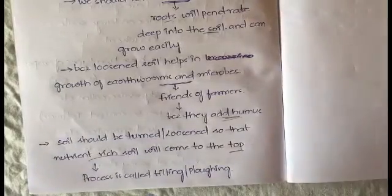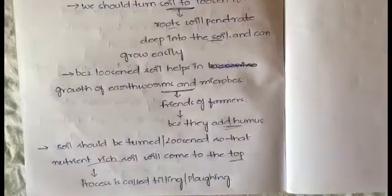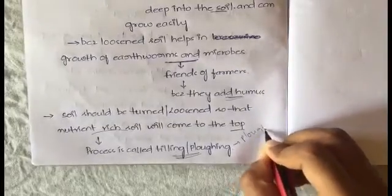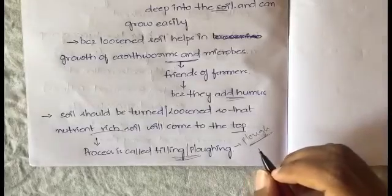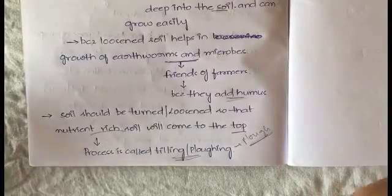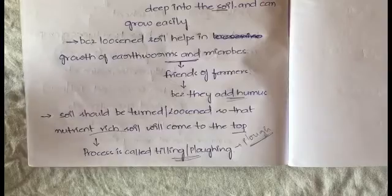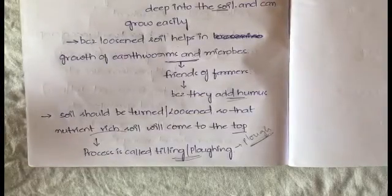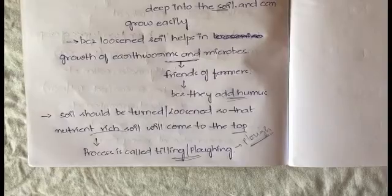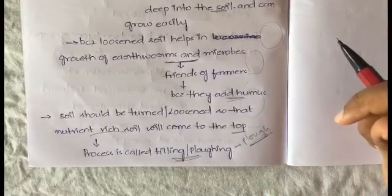The process of turning or loosening the soil is called tilling or plowing, and it is done using an instrument called a plow. A plow is made up of wood or iron. If the soil is very dry, we add some water to make it somewhat wet so you can plow easily. When you plow the field, it gets split into many parts and there may be big pieces of soil, which are called crumbs.